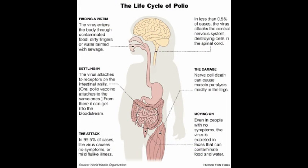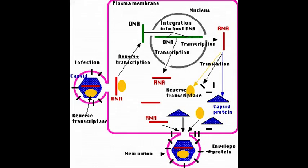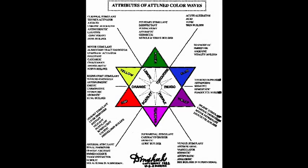In combination with other viruses and fungi, the retroviruses can also be found in lymph cell sarcoma, T-cell lymphoma, sarcoma, peripheral T-cell lymphoma, lupus, multiple sclerosis, and hairy cell leukaemia.